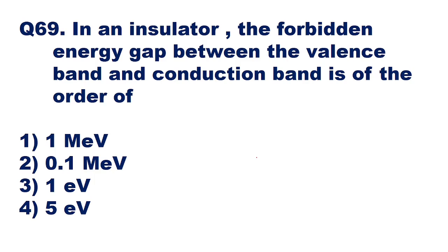In this question it is asked that in an insulator, the forbidden energy gap between the valence band and conduction band is of the order of: 1 mega electron volt, 0.1 mega electron volt, 1 electron volt, or 5 electron volt.